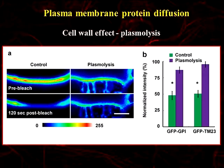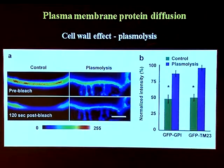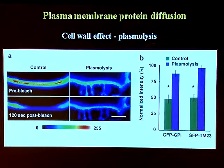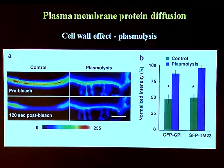We also used plasmolysis — for those not familiar, that means treating cells with an osmotic medium so that the plasma membrane shrinks away from the cell wall. If proteins in the plasma membrane had been interacting with the cell wall, they would no longer be able to interact once plasmolysis takes effect. For GFP-GPI and GFP with the single transmembrane domain, in control conditions before plasmolysis, we would bleach and after two minutes there would be very little, if any, recovery of the fluorescence into the bleach spot. But as soon as we plasmolysed cells, bleached, and waited two minutes, the fluorescence recovery was very, very high. So there's a huge recovery — lots more protein mobility — as soon as the cell wall isn't in the equation anymore.